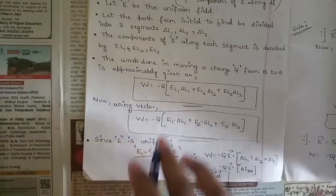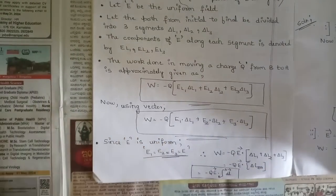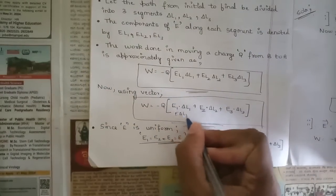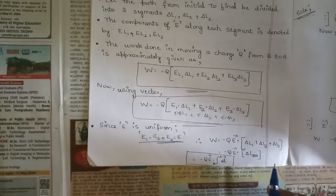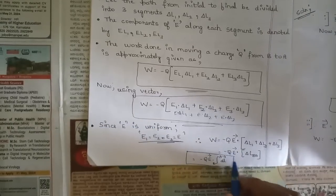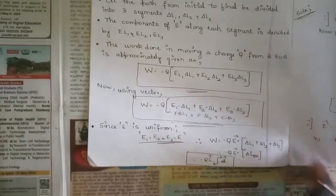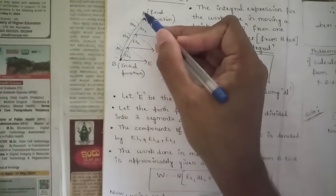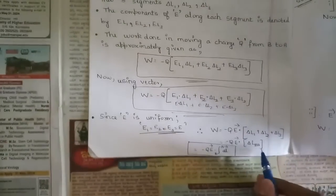Since the electric field is uniform, E1, E2, E3 are all equal to E. So we can take E outside: W = -Q × E⃗·(Δl⃗1 + Δl⃗2 + Δl⃗3). The summation of the three segment vectors from initial to final position gives Δl from B to A.